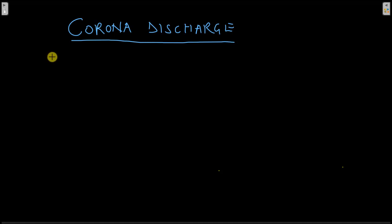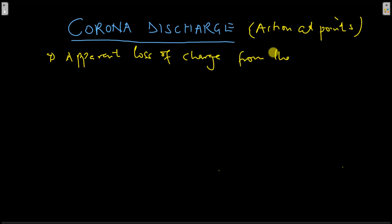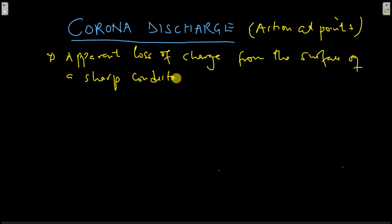In the previous section, we discussed the distribution of charge across conductors. Let us now discuss the concept of corona discharge, also known as action at points. Corona discharge is the apparent loss of charge from the surface of a sharp conductor due to very high electric field intensity.